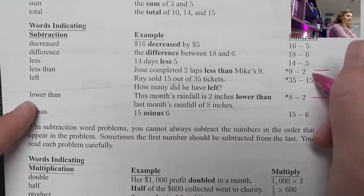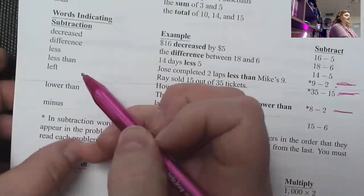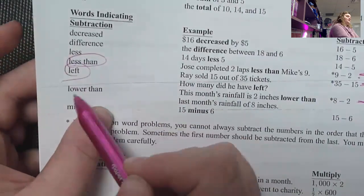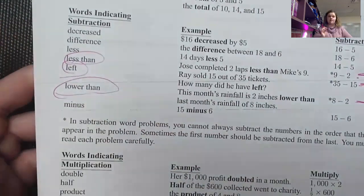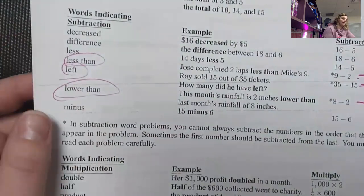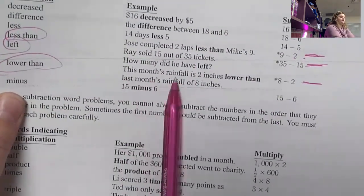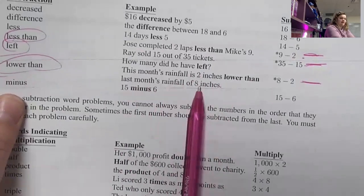So that is when you have to worry about the order. So that's why I highlighted those. So if you see anything that says less than, you have to switch the order. If you see left, and if you see lower than, you need to switch the order.